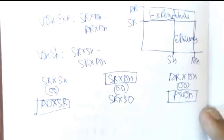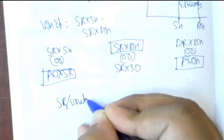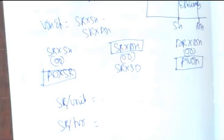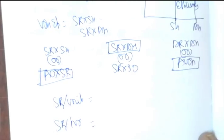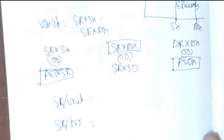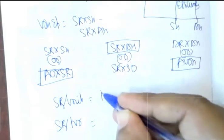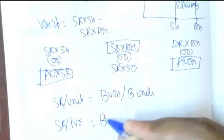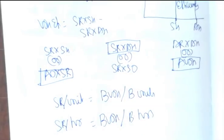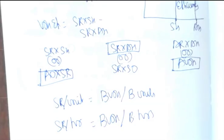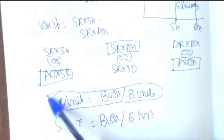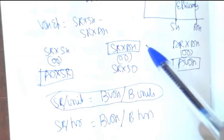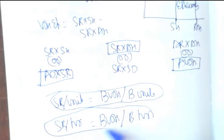For any problem you solve on variable overhead, the first thing you should start your calculation with is SR. There are two types of SR: SR per unit and SR per hour. SR per unit equals budgeted variable overhead divided by budgeted units. SR per hour equals budgeted variable overhead divided by budgeted hours. This will be your starting point for any problem on variable overhead variances.